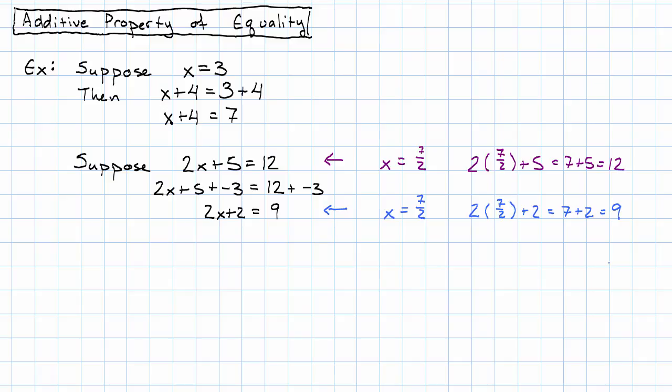We can go even further than that. We can even add variable expressions to both sides. Suppose that we know that X plus four gives the number six. Well, I could add twice X to both sides. So X plus four plus two X is six plus two X.